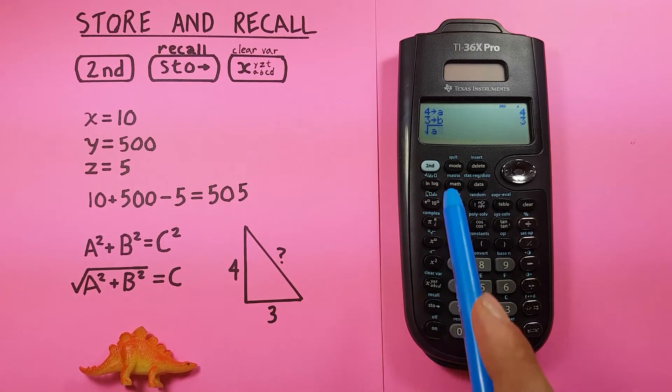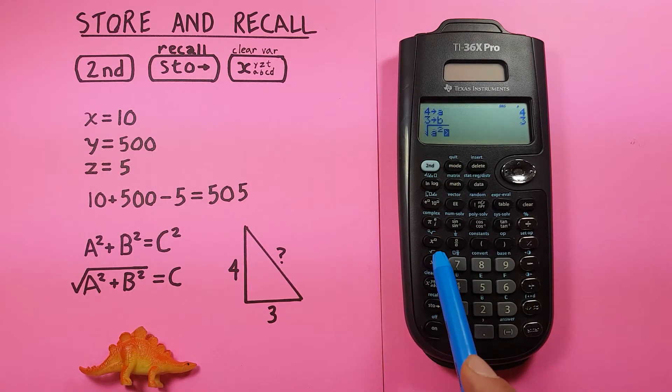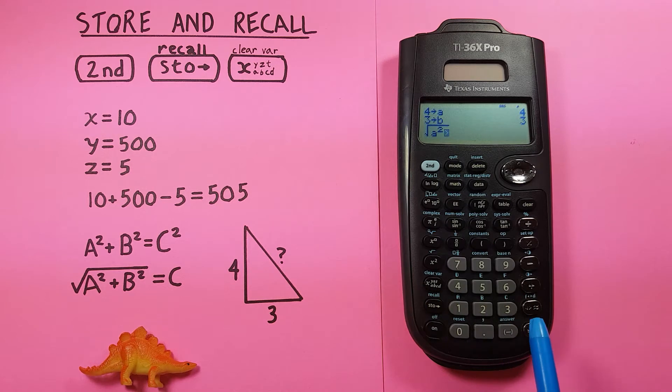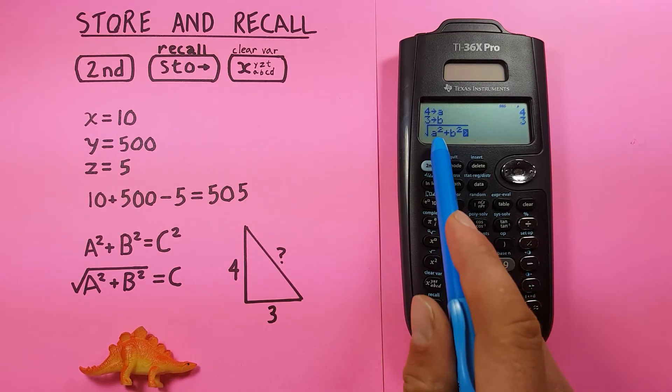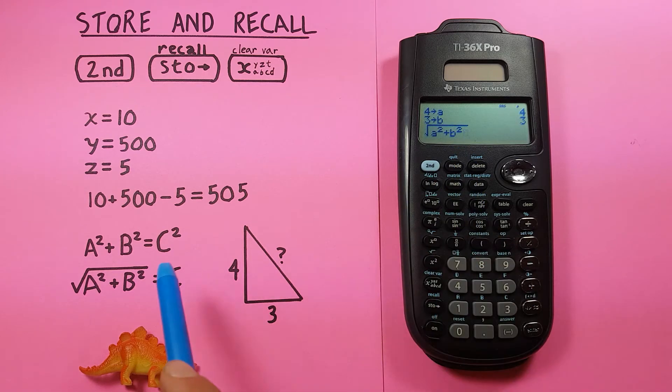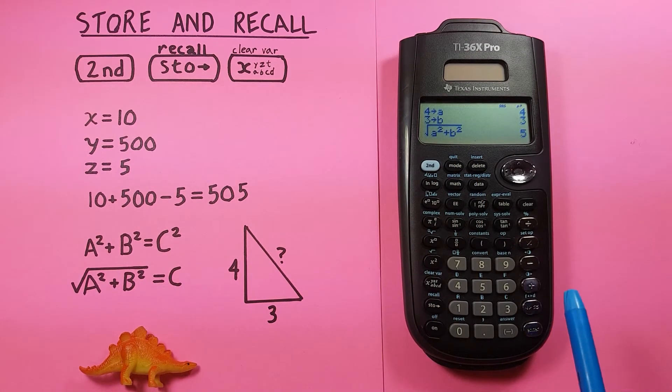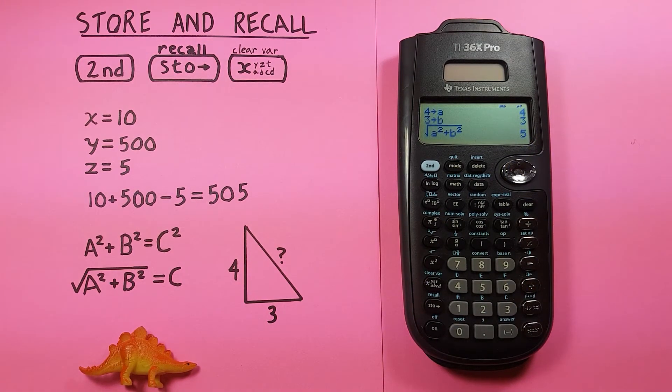And then a. We can bring up our a by going 1, 2, 3, 4, cycle through to the a there, and then squaring that, and then adding the b, cycle through to our b, squaring that as well. So, you can see our formula here is square root of a squared plus b squared, which is what we want. And if we press enter, we see we get the result of 5, which is our c, and that works.